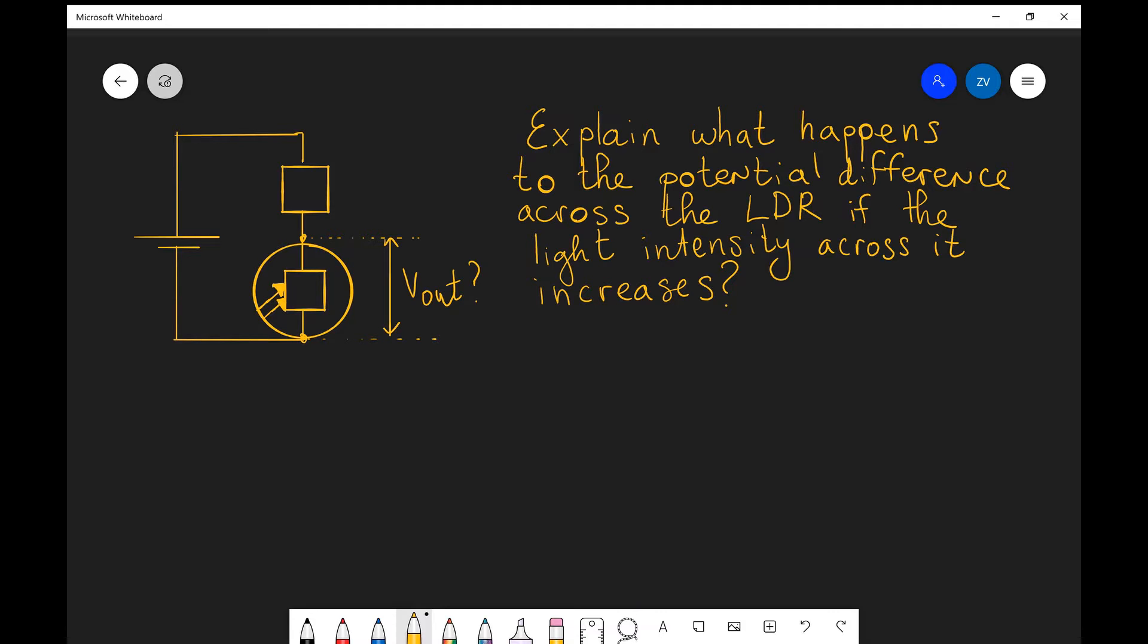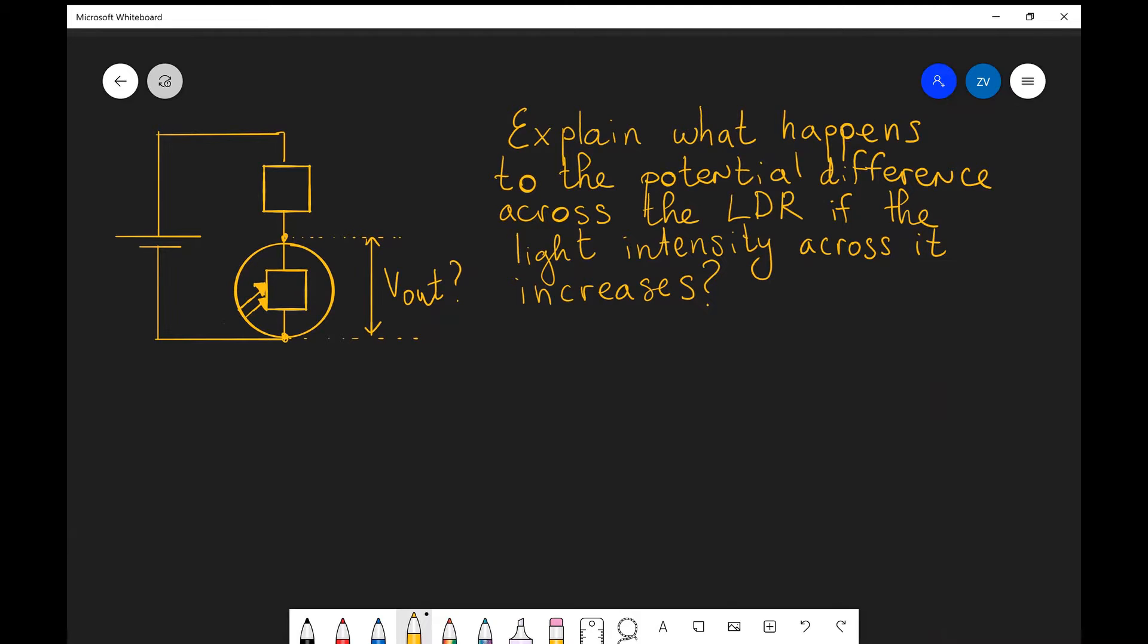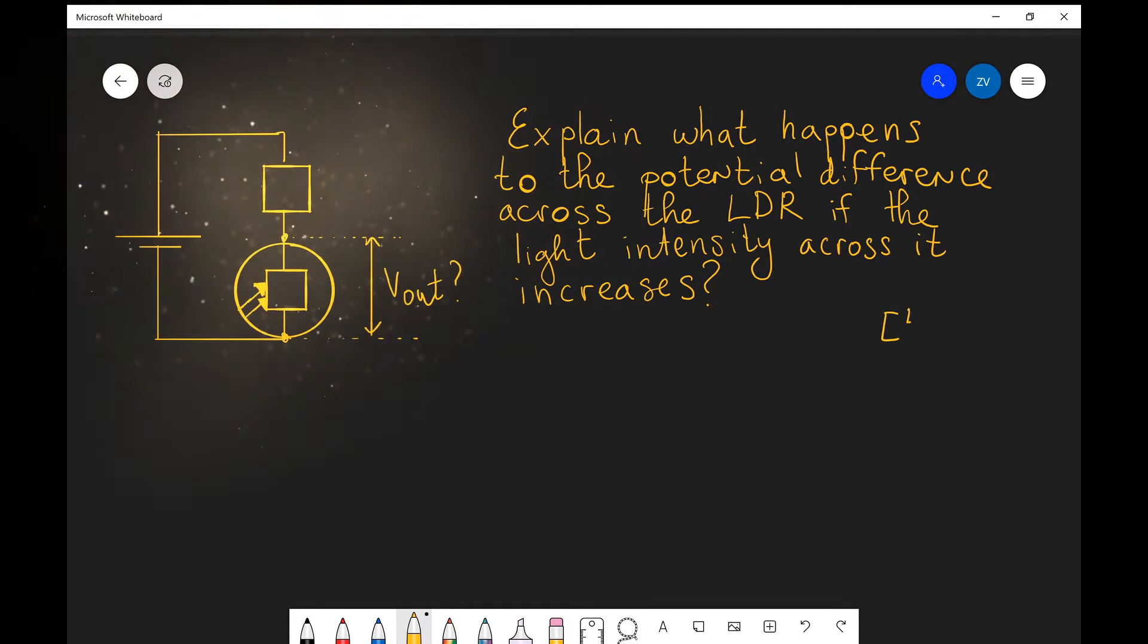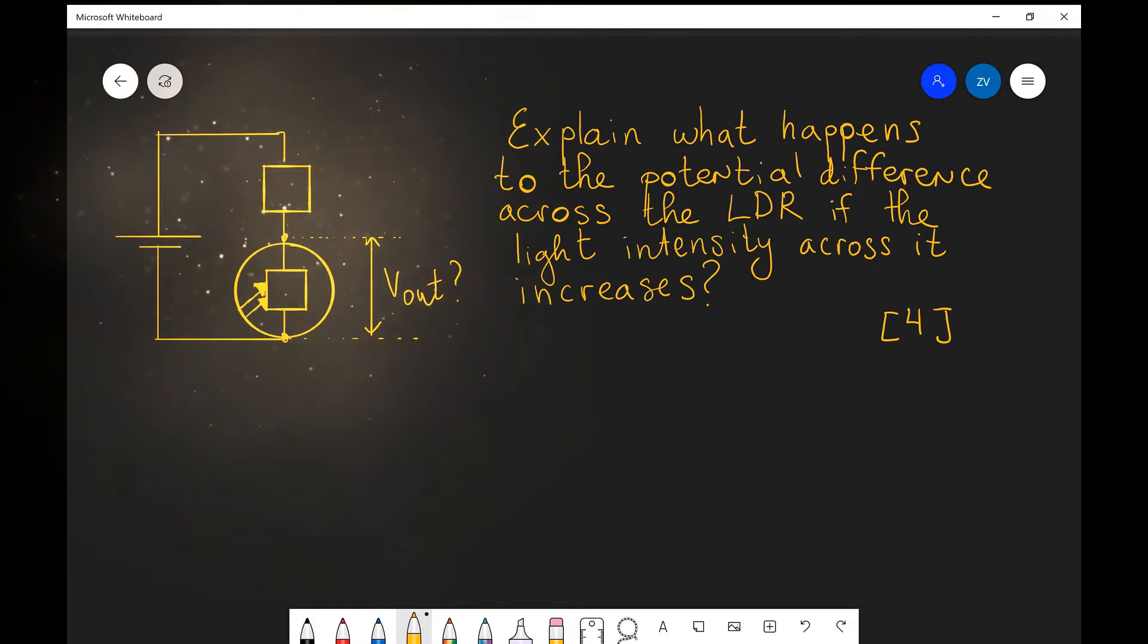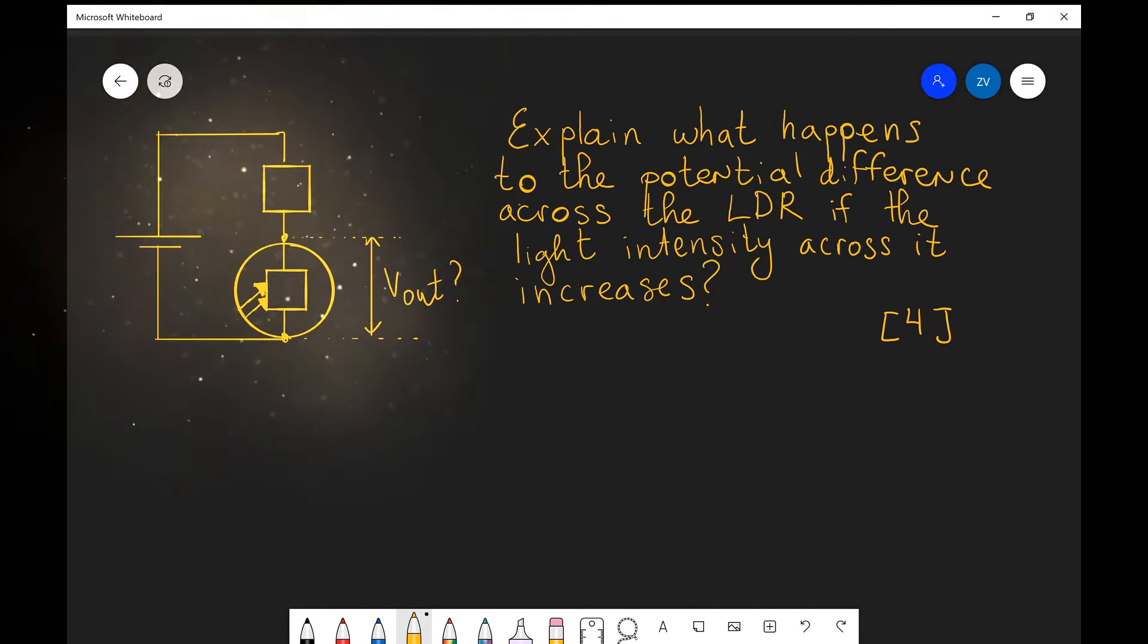What we're being asked to do is to explain what happens to the potential difference across the LDR if the light intensity increases. And this is a four mark question. As always our very first step is to explain what happens to the resistance of the LDR if we were to increase the light intensity.